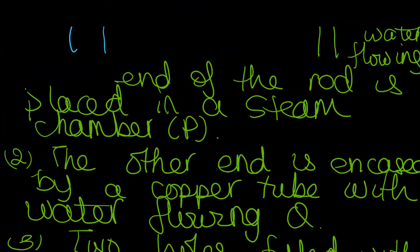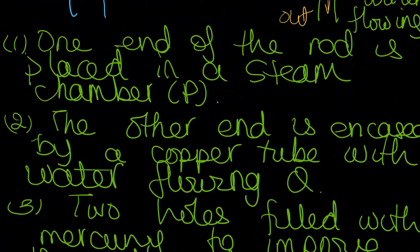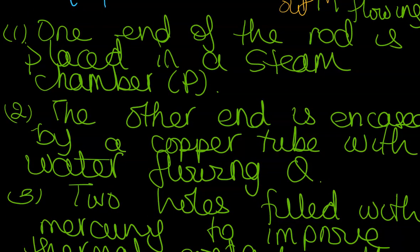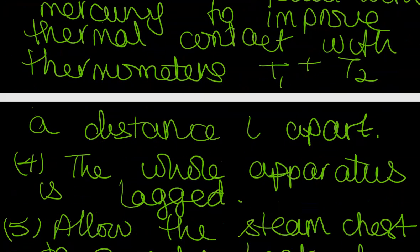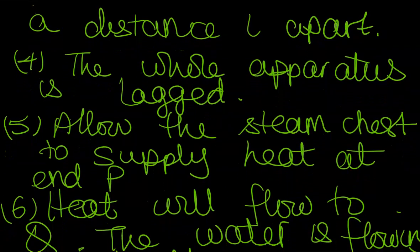So let's go back through the whole thing now. One end of the rod is placed in a steam chamber, P. The other end is encased by a copper tube with water flowing, Q. Two holes filled with mercury to improve thermal contact have placed thermometers T1 and T2, a distance L apart. So L would represent X basically.